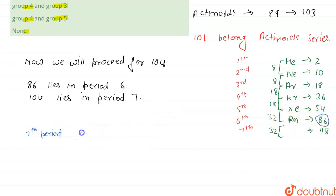So 87 will be the 1st element of period 7, 88 will be the 2nd and 89 will be the 3rd. We know that from 89 our actinoid series starts.